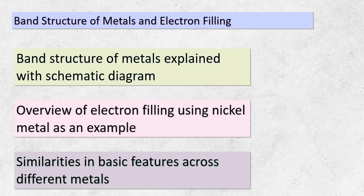Today, we're delving into the intriguing world of band structures in metals. Our journey starts with a schematic representation of a typical metal's band structure, as shown in figure 12.23. While the electron filling depicted here corresponds to nickel metal, the fundamental characteristics are quite similar across various metals. Let's focus on the electron configuration of a nickel atom: 3d⁸4s²4p⁰, as shown on the left side of the figure. The energy bands we'll talk about arise from these orbitals, and we'll treat the 4s, 4p, and 3d orbitals independently. These orbitals each contribute to a band of molecular orbitals, which in practice aren't entirely isolated from one another.